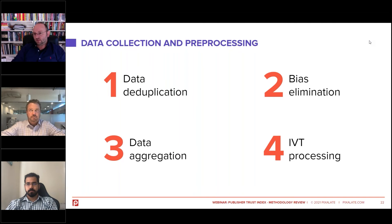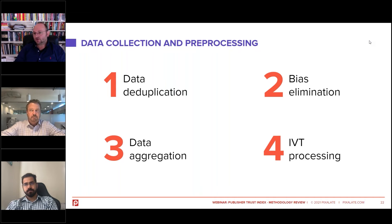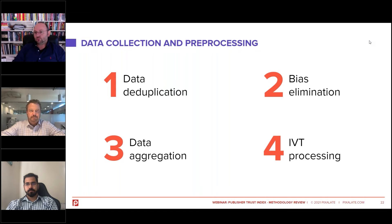After deduplication, we follow a bias elimination process — step number two. This is very important because when you try to rank publishers, you don't want any sampling bias or selection bias introduced. This really means you might have a source that sends you more impressions about a given publisher than others, which can make that publisher appear better overall. Another case we want to capture is publishers that appear cleaner because a certain vendor only focuses on the good inventory — an example of selection bias. By looking at the data holistically and eliminating sources and normalizing the data, we are able to balance things out and produce a more accurate picture about publisher behavior.